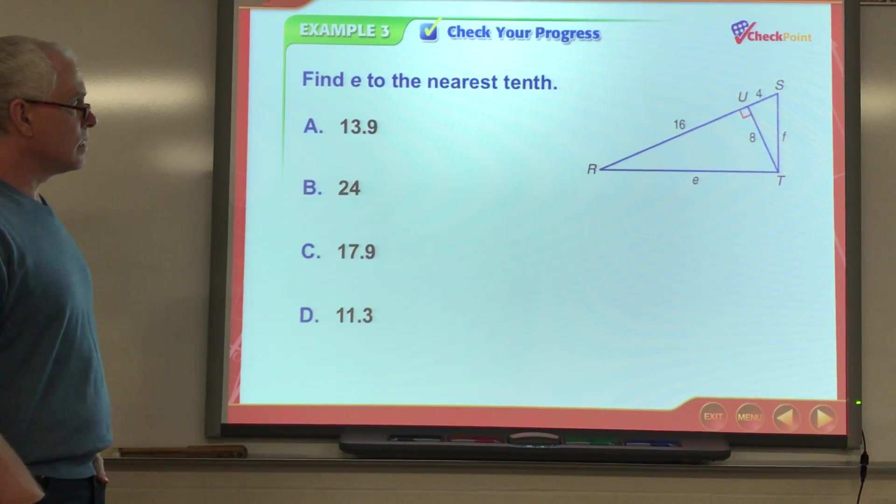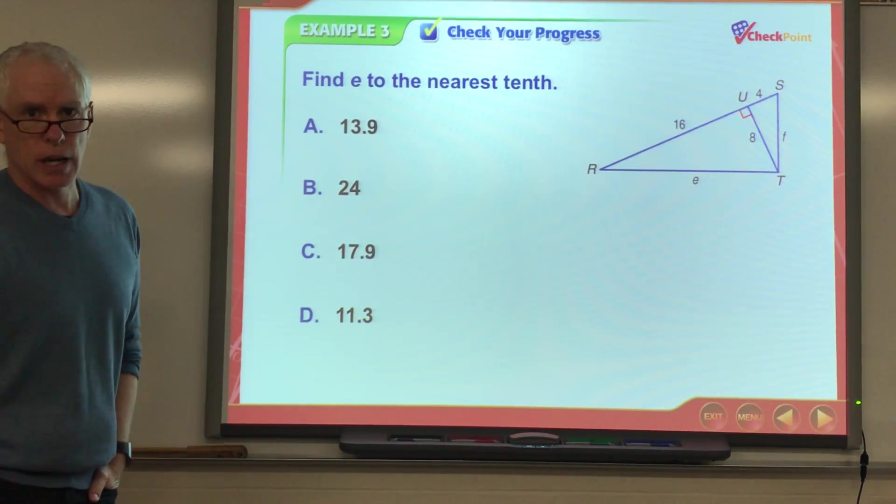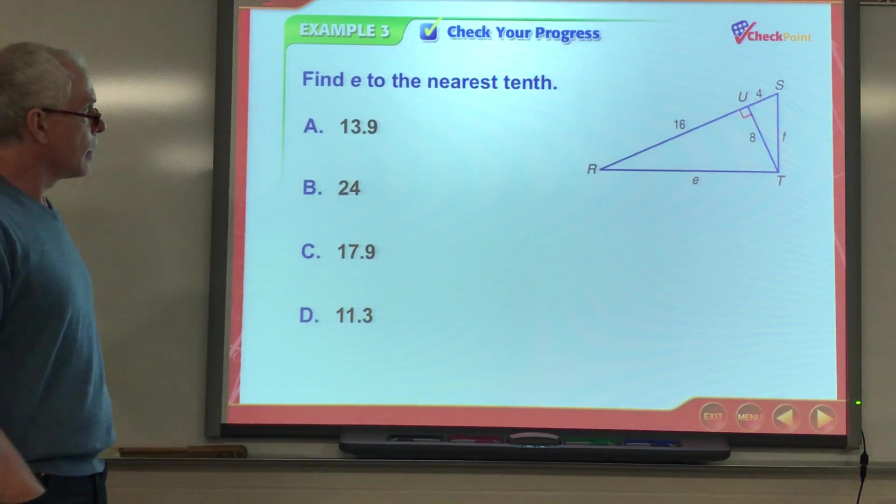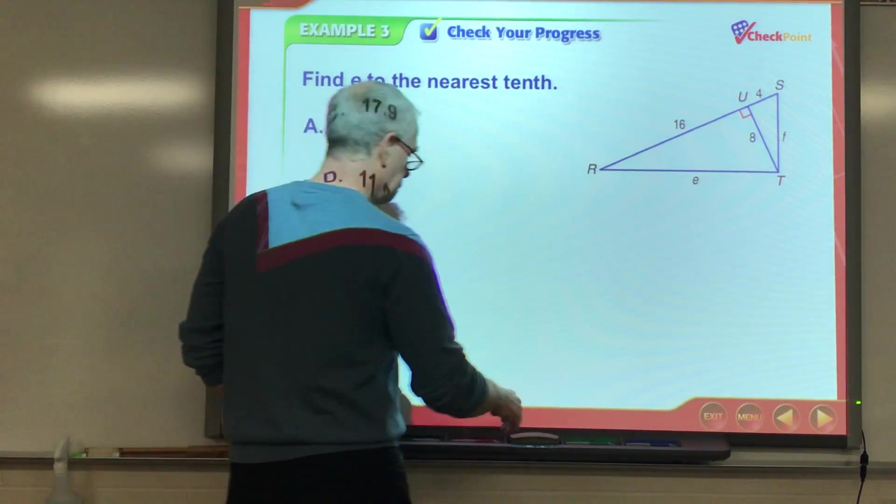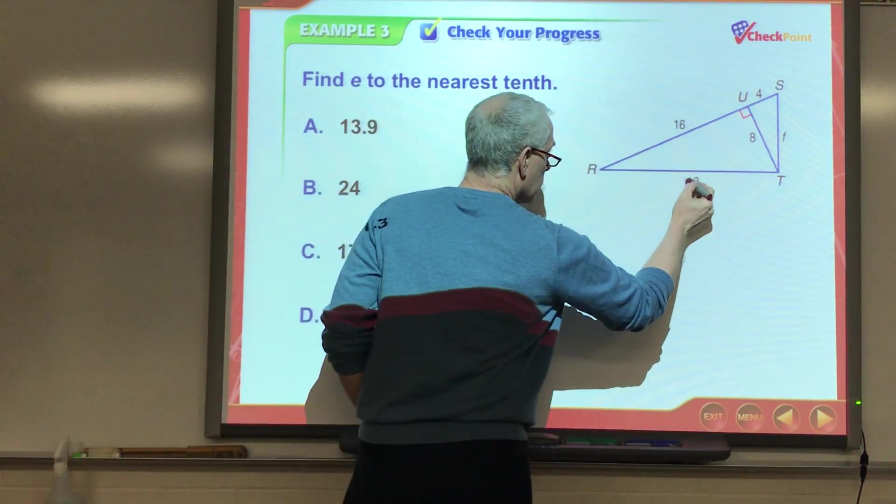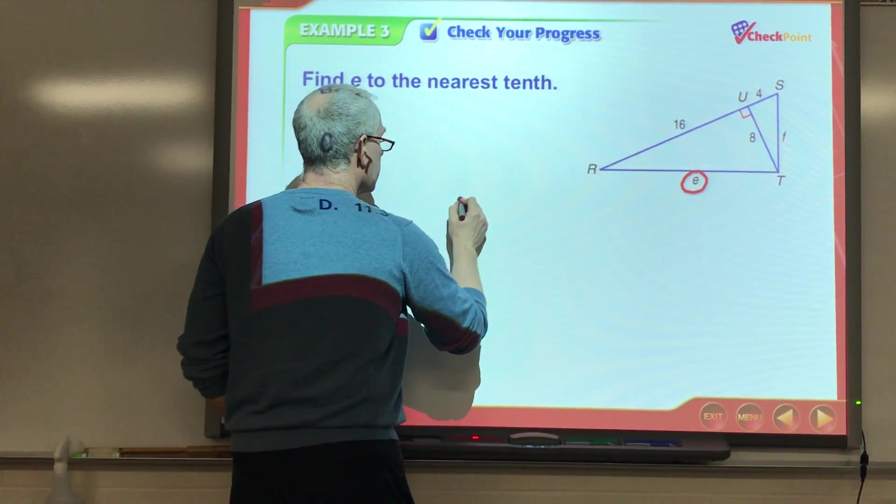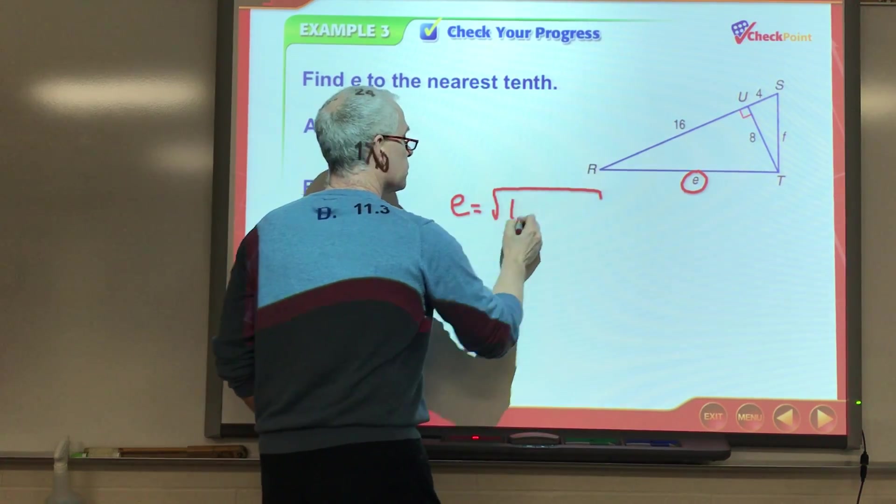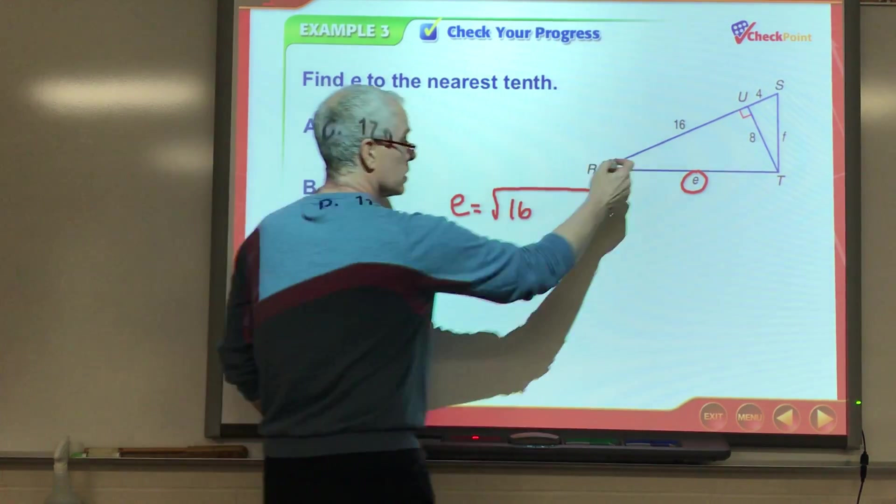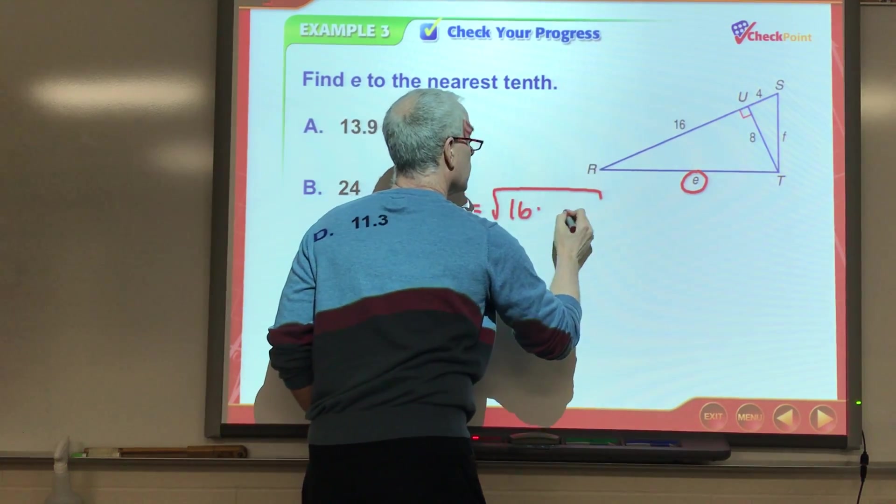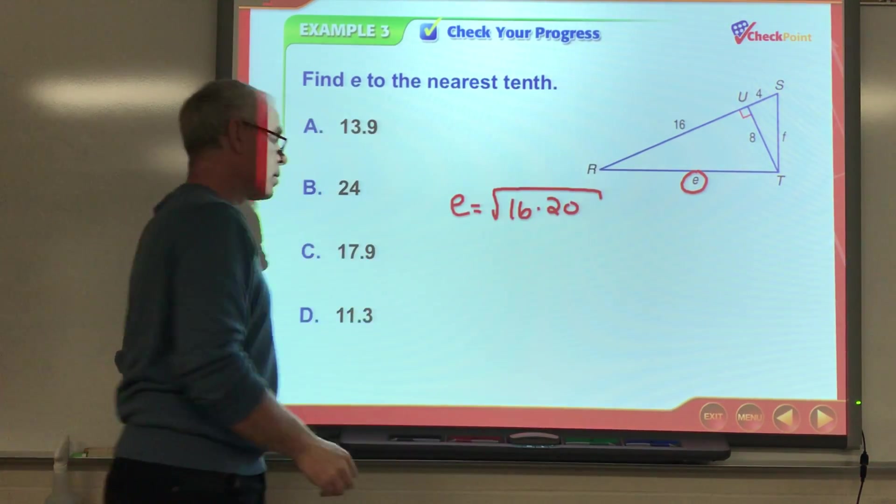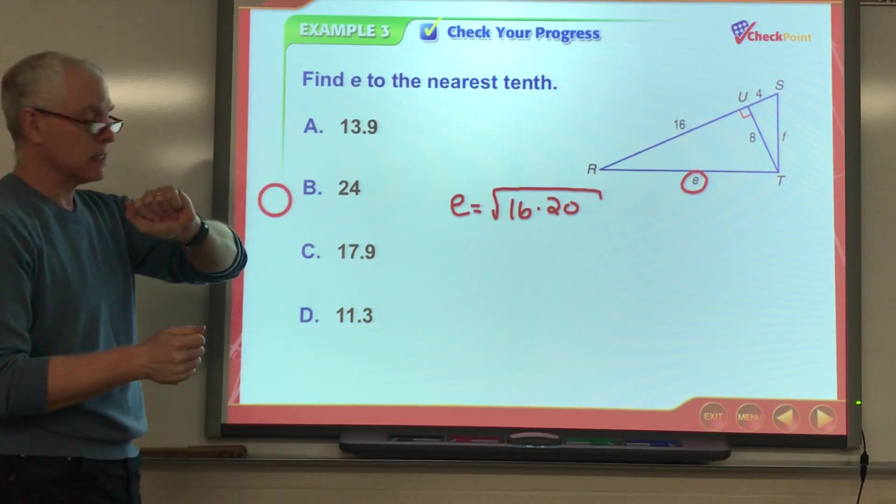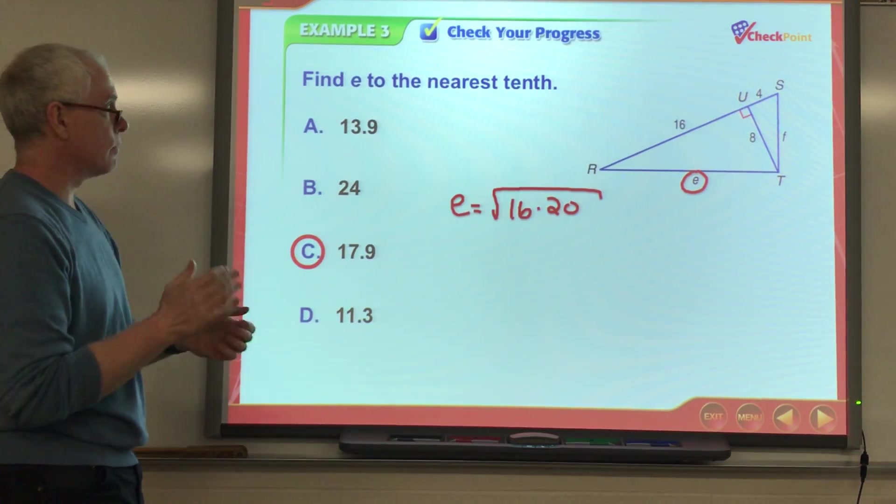All right. Find E to the nearest tenth. Pause your video. Give this a shot. Okay. All right. So, find E. All right. So, that leg is the square root of the adjacent part, 16, and the entire length of the hypotenuse, 16 plus 4, or 20. So, if you grab your calculator and you type in the square root of 16 times 20, you should get 17.9. If you did that, give yourself a pat on the back.